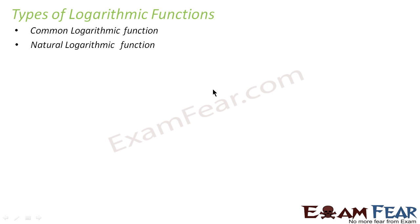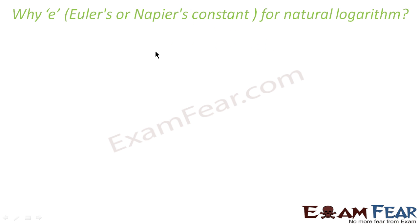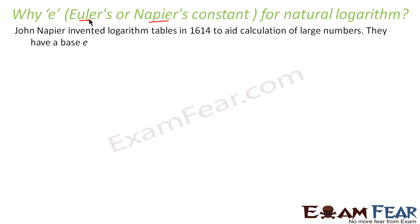There are two kinds of log functions: common log (base 10), used mainly in physics, and natural log (base e), used mainly in mathematics. The question arises: why this particular e? What is so special about e, and what is its value? This e is called Euler's or Napier's constant.